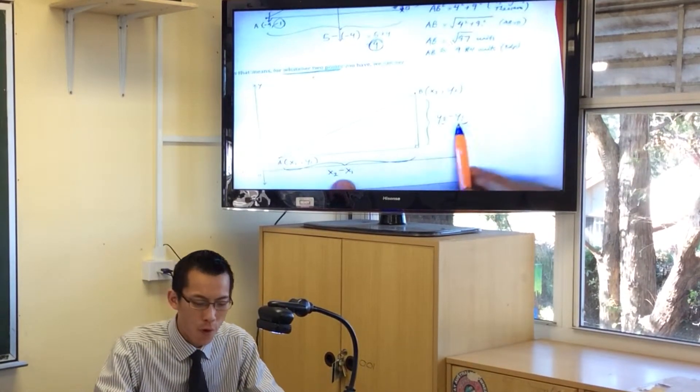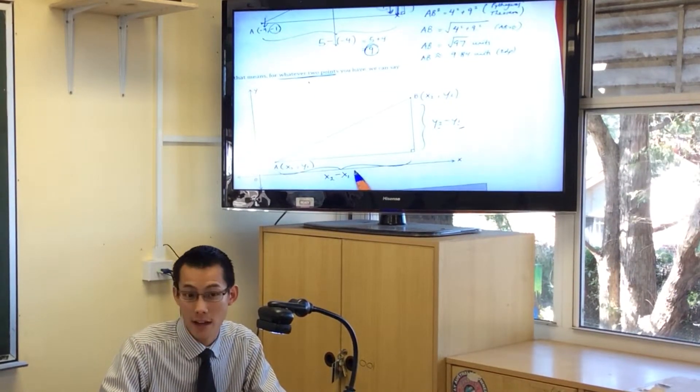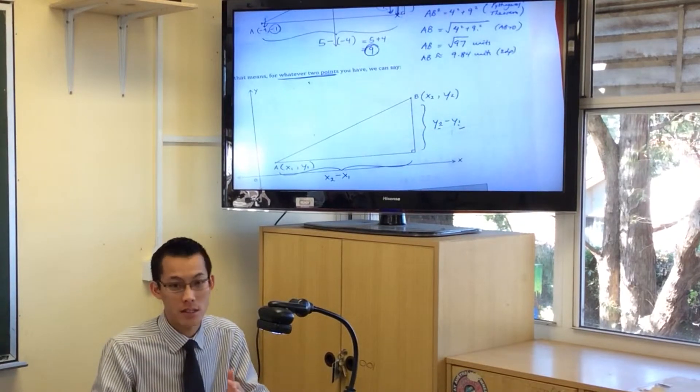Now, this point before, we would get what these numbers are. We'd say, oh, look, this is 4. And, oh, look, this is 9. And then I'd put them into Pythagoras' theorem, okay?